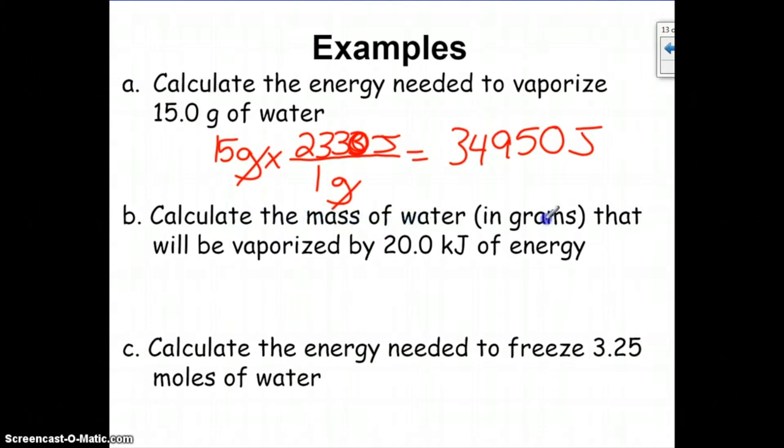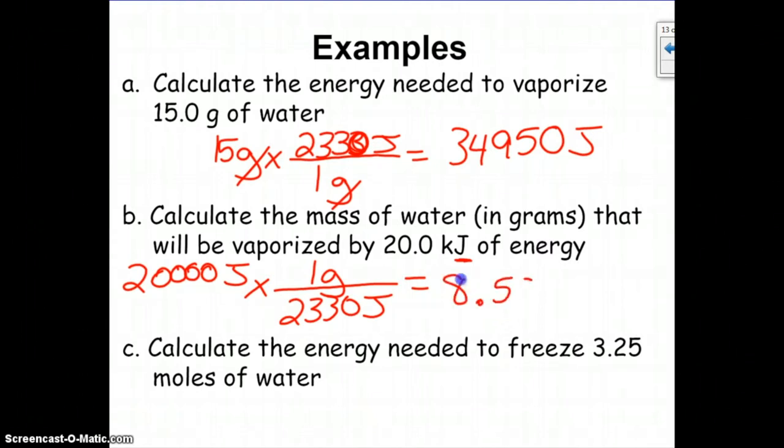How about the mass of water in grams that can be vaporized by 20 kilojoules of energy? Our conversion factors are in joules, not kilojoules, so we'll need to convert. 20,000 joules is 20 kilojoules. Vaporization, so again, heat of vaporization. We're going to use the same conversion factor, but now joules is on top, so we're going to have to flip it so that our units line up. Basically you have 20,000 divided by 2,330, which will vaporize 8.58 grams of water.